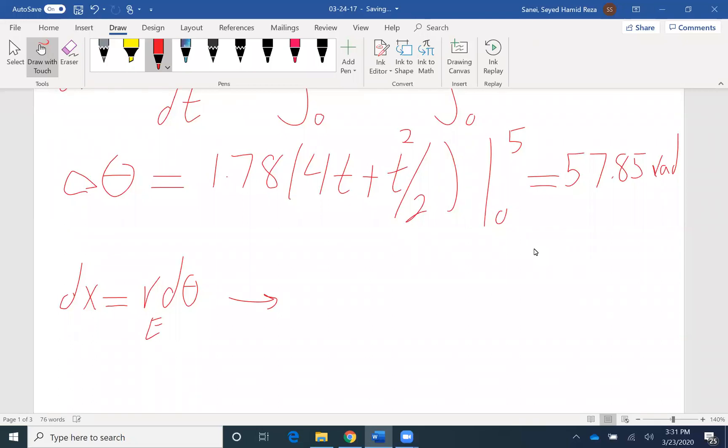And this radius is our shaft E radius. So if you're interested in finding a displacement dx, zero to delta x dx equals r d theta. R is the same, is 0.05, and delta theta would be 57.85. Therefore, delta x would be 2.89 meter.